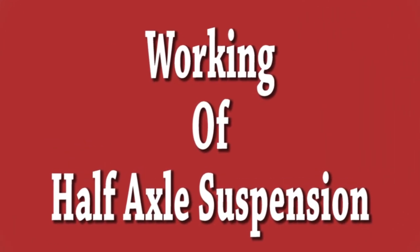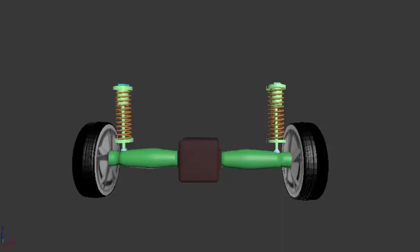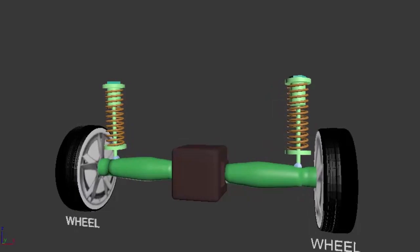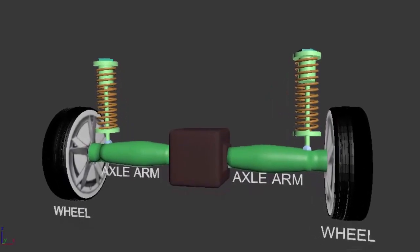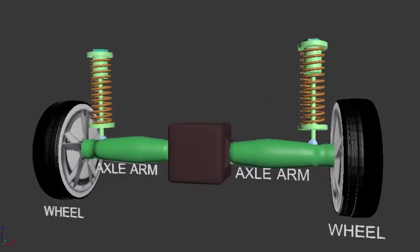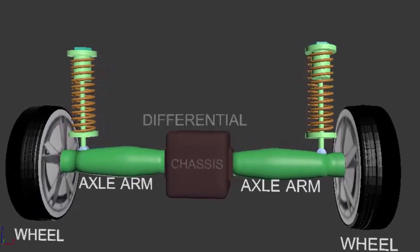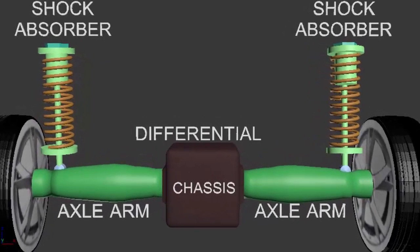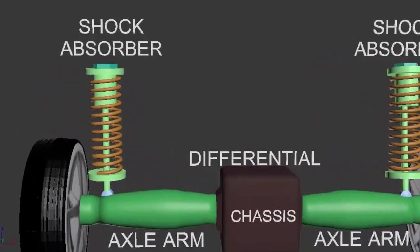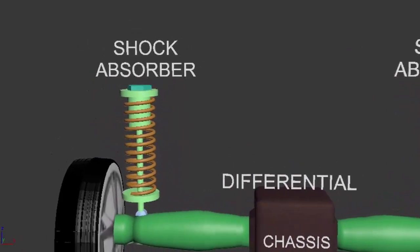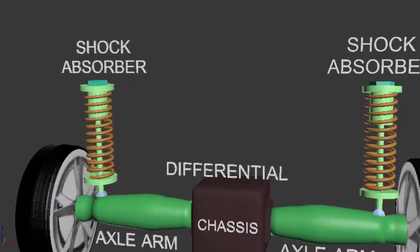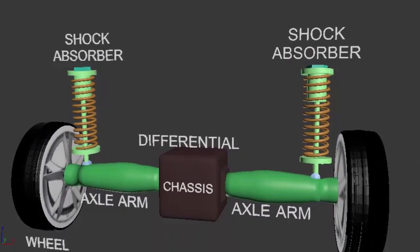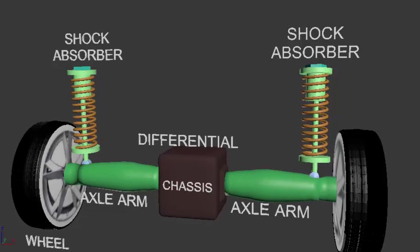Let us see the working of half axle suspension in this video. First we will identify the components: wheels, axle arm, differential or chassis, and shock absorbers. Shock absorbers are comprised of springs and a cylindrical suspension object which absorbs the disturbances. We can see that wheels are mounted rigidly to axle. These half axles are independent to move and are connected to chassis or differential.